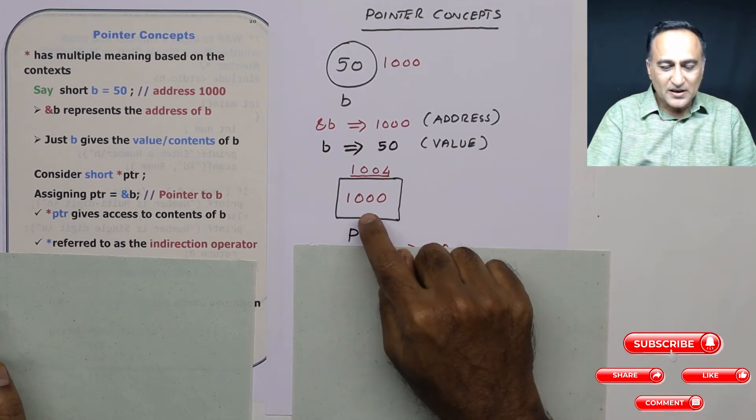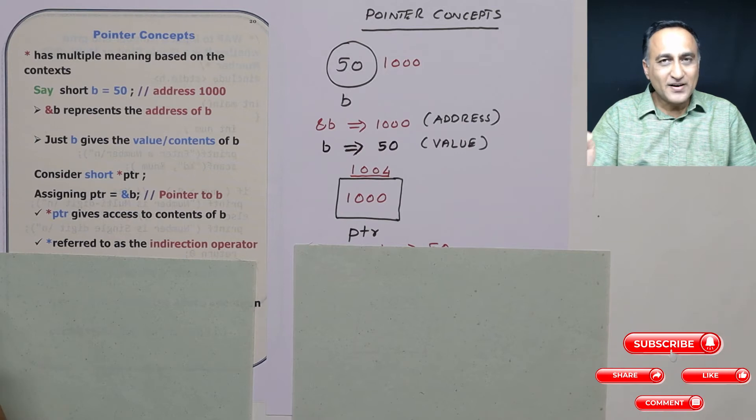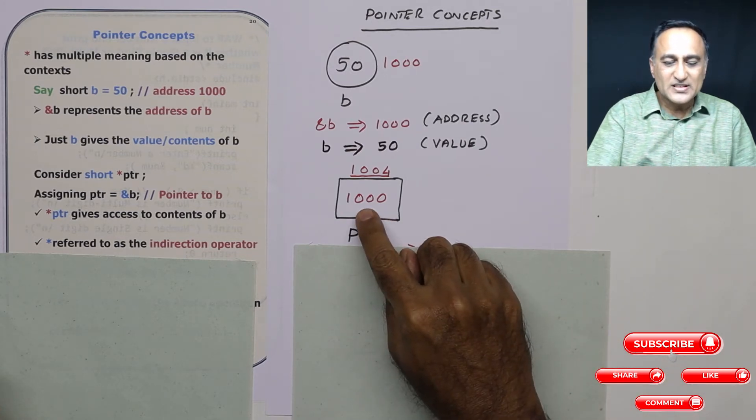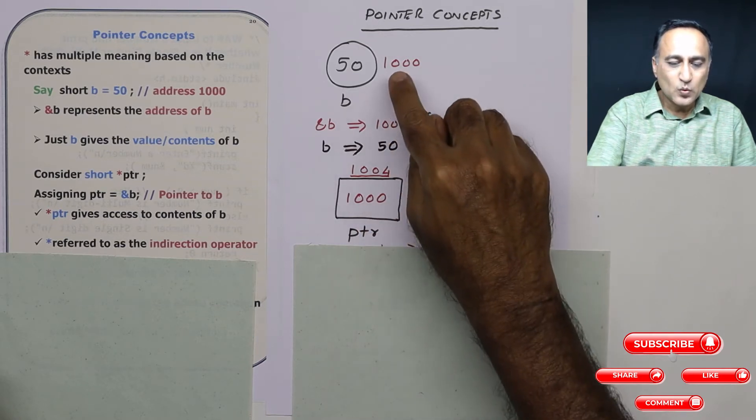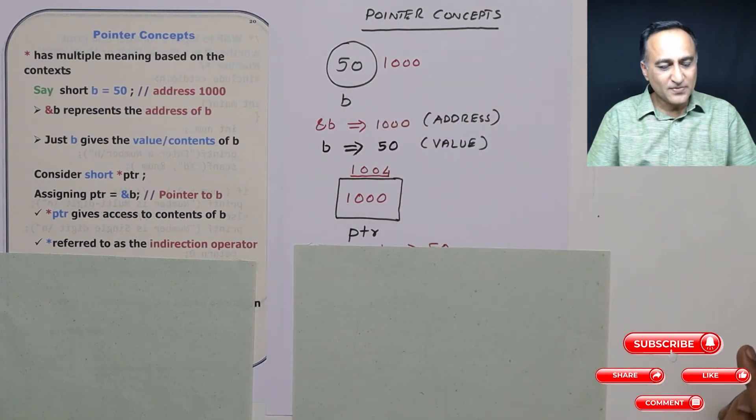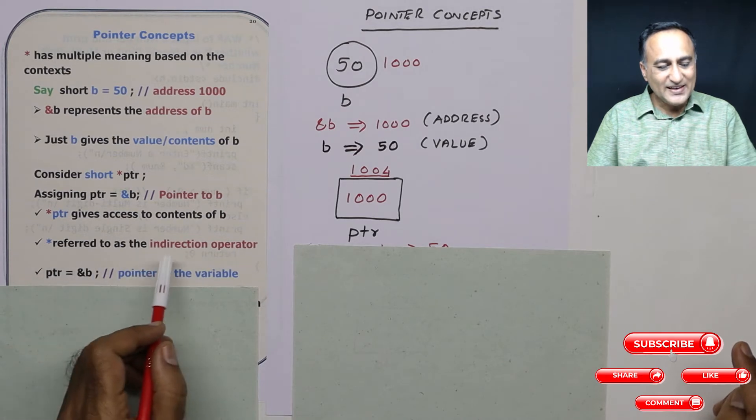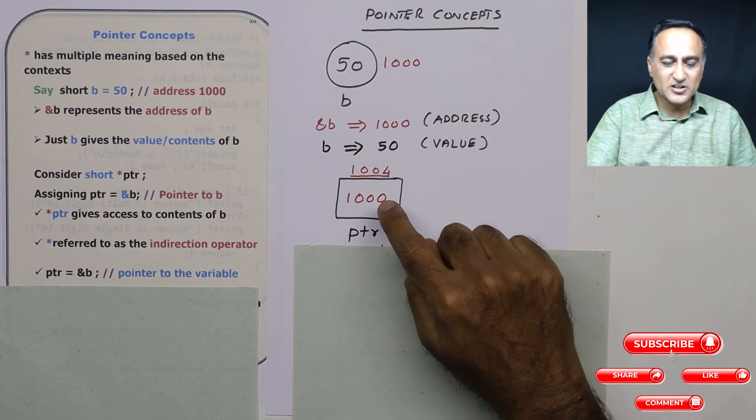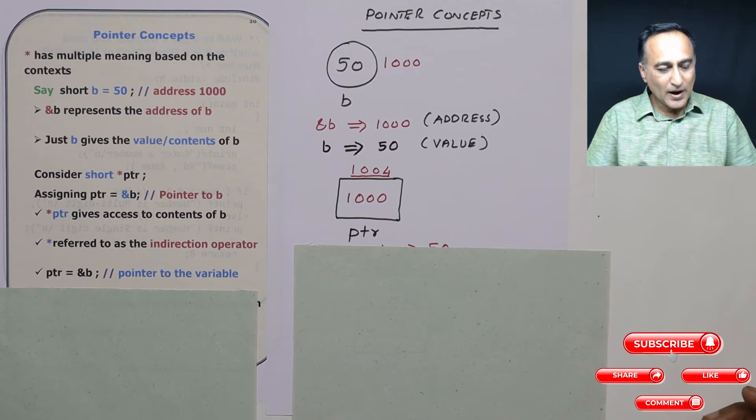So if I just print ptr, it is going to print 1000 just like any other value. But if I say star ptr, it is going to print what is the value or content at address 1000. What is the content at address 1000? It is 50. So thereby star is referred to as the indirection operator or the dereference operator. Indirection because from here it directs you towards 50 and gives you the value.